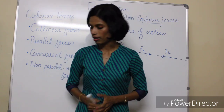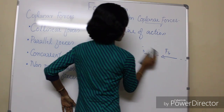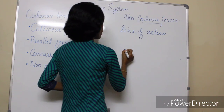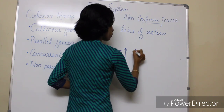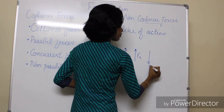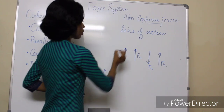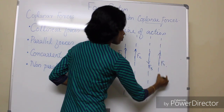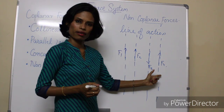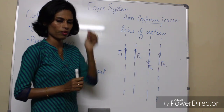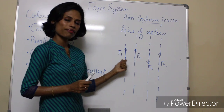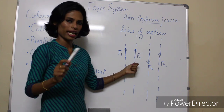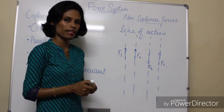Next one is parallel forces. Parallel forces are forces which have lines of action that are parallel. Here F1, F2, F3, and F4 — drawing the lines of action of all these forces shows that all these lines are parallel. So these type of forces are known as parallel forces. Now consider F1 and F2: the lines of action are parallel and these two forces are in the same direction. When lines of action are parallel and the forces are also in the same direction, they are known as like parallel forces.